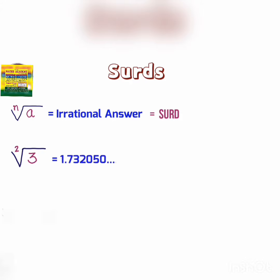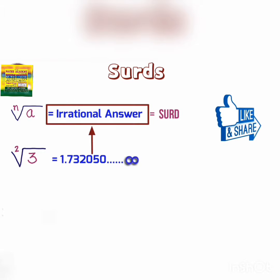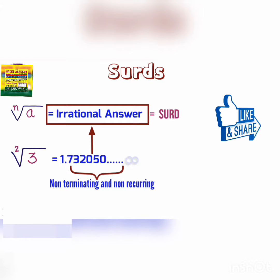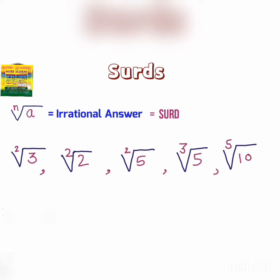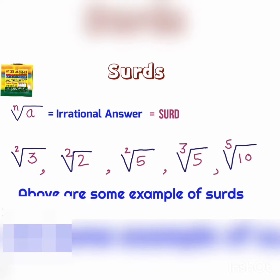The value of square root of 3 is 1.732050 and so on till infinity, which is an irrational number because the digits after the decimal point are non-terminating and non-recurring. Since square root of 3 gives an irrational number as an answer, it qualifies as a surd. Square root of 2, square root of 5, cube root of 5, and fifth root of 10 are some other examples of surds.